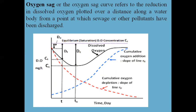Oxygen Sag: the oxygen sag curve refers to the reduction in dissolved oxygen plotted over the distance along a water body from the point at which sewage or other pollutants have been discharged. This graph shows dissolved oxygen versus time. It includes the reference point for dissolved oxygen, cumulative oxygen addition, and a red line showing cumulative oxygen depletion. The curve plots dissolved oxygen in mg/L versus time in days.